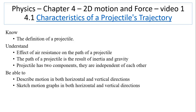The objectives are: to know the definition of projectile, to understand the effect of air resistance on the path of a projectile, to understand that the path of a projectile is the result of inertia and gravity, to understand a projectile has two components that are independent of each other, and to be able to describe motion in both horizontal and vertical directions and sketch motion graphs in both directions.